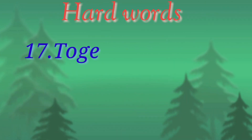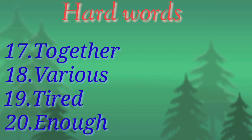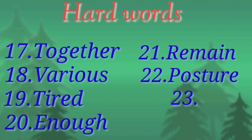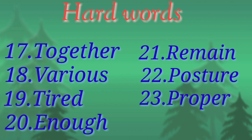Then Together, T-O-G-E-T-H-E-R, means Saath me milke. Then Various, V-A-R-I-O-U-S, means alag alag, meaning different. Then Tired, T-I-R-E-D, means Thuka hua. Then Enough, E-N-O-U-G-H, means Kafi or Paryapt. Then Remain, R-E-M-A-I-N, means Rahna or stay. Then Posture, P-O-S-T-U-R-E, means position or Sthiti. Then Proper, P-R-O-P-E-R, means Yogya, Uchit, or rightful. Here we complete our hard words.